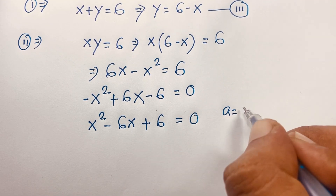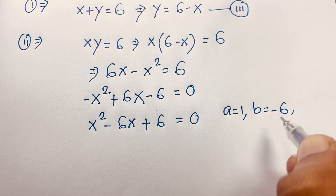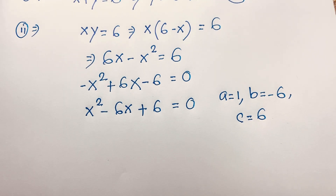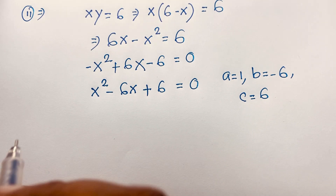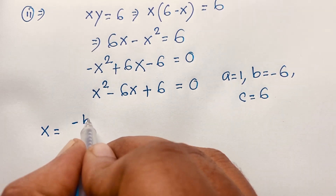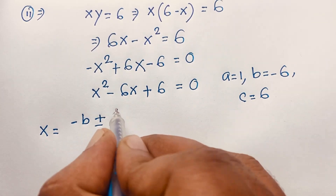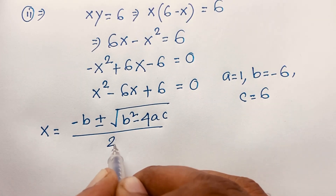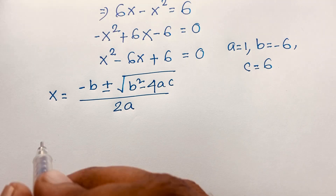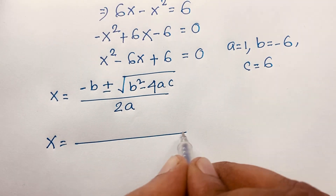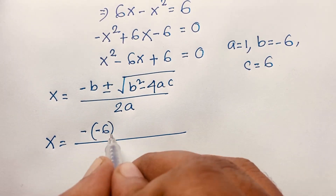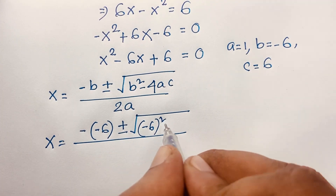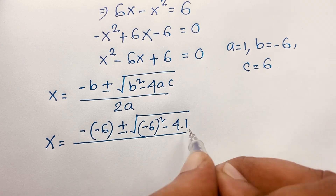You can see here: a equals 1, b equals negative 6, and c equals 6. Now if I want to find x using the quadratic formula, it will be x equals minus b plus or minus square root of b squared minus 4ac, all over 2a. Substituting: minus b gives us positive 6, and b squared is negative 6 squared, minus 4 times a times c, with a equals 1.